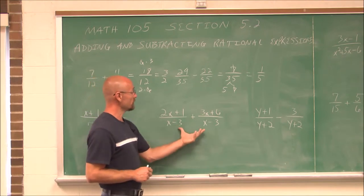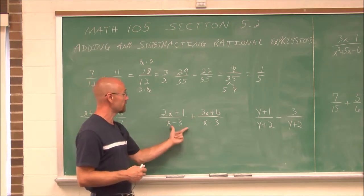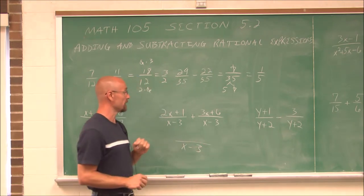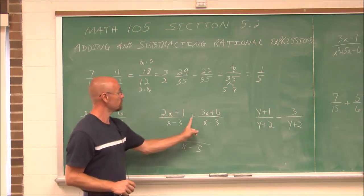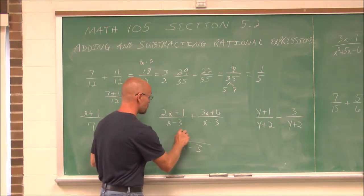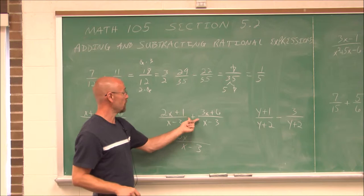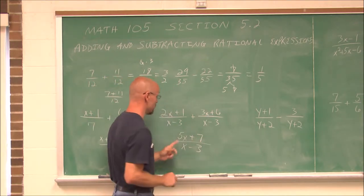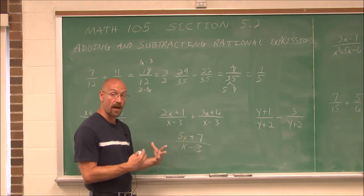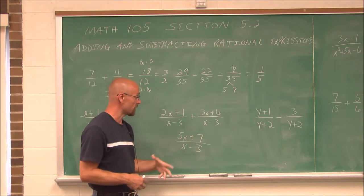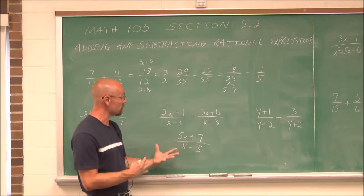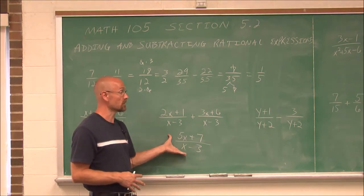This next example may be a little more intimidating because we're having larger polynomials, but don't panic. If they have the same denominator, simply combine like terms. We have 2x plus 3x for a total of 5x, and positive 1 plus 6 gives 7, so we get 5x plus 7 over x minus 3. There's no factoring to reduce, so this is the simplified answer.